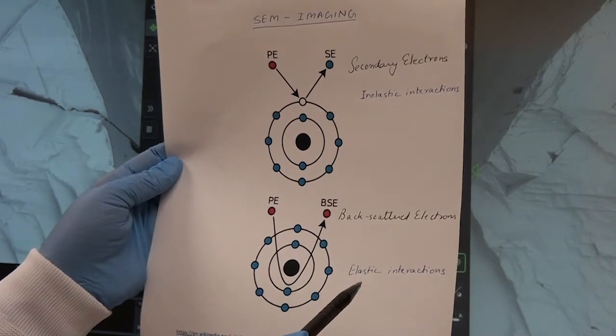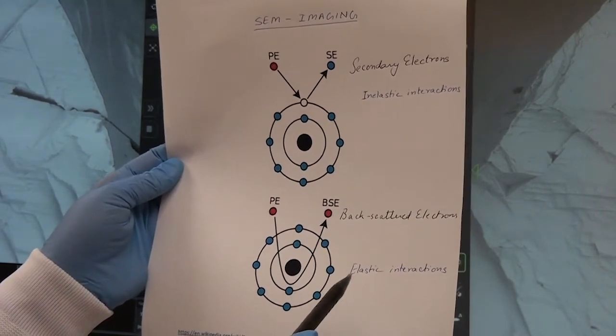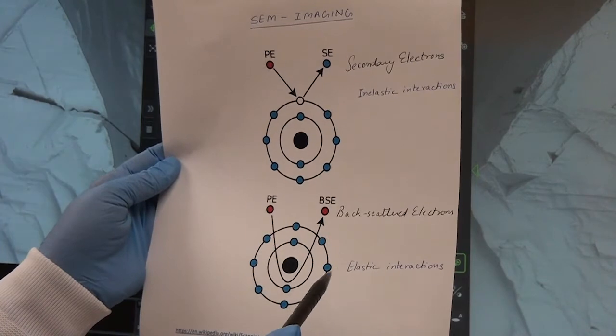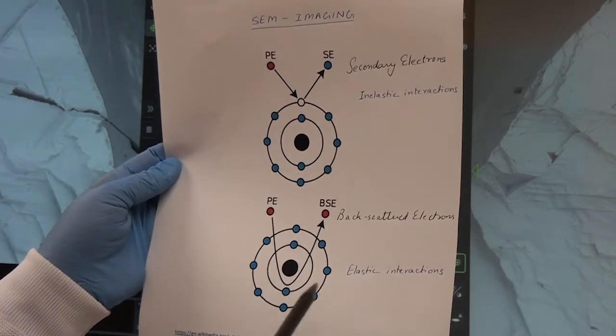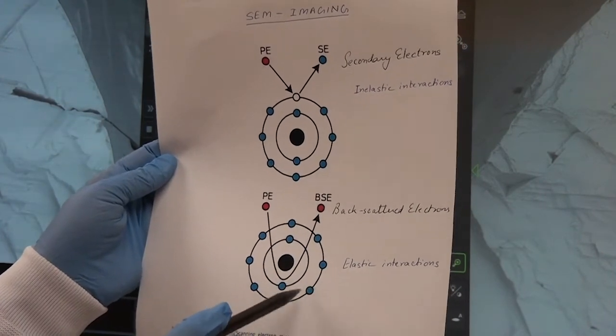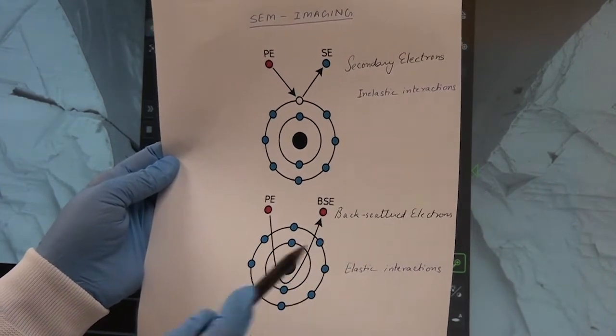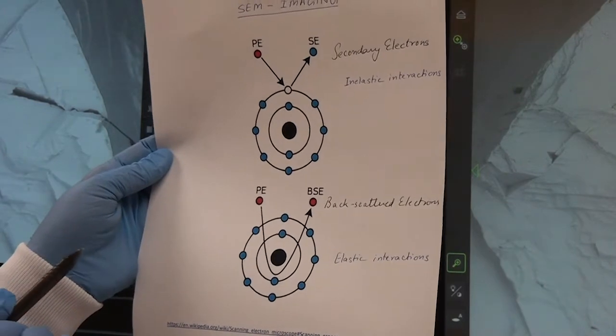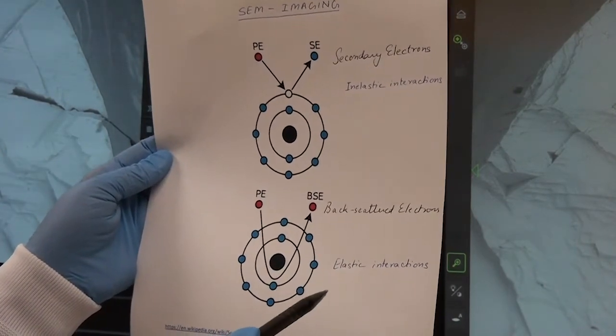Higher the atomic number, or higher the Z, more efficient is the atom impact scattering, and hence more BSE are produced. This shows as a brighter image on the screen. So BSE is dependent upon the size of the atom in the sample.